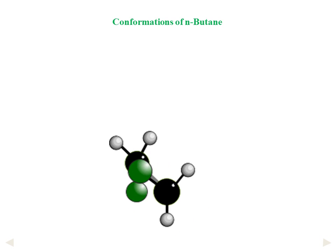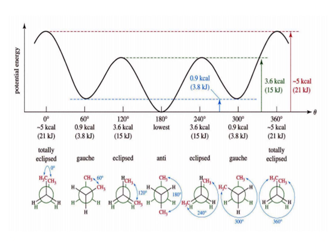Out of that N number of conformations, the 7 extreme conformations of N-butane are shown in the slide. When the dihedral angle between the methyl group of the first carbon atom nearer to the observer and the methyl group of C2 is 0°, this conformation is called totally eclipsed or fully eclipsed.